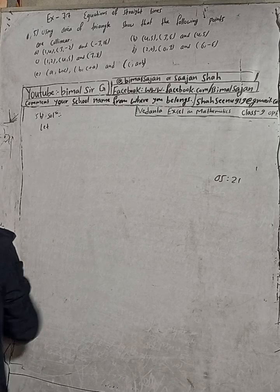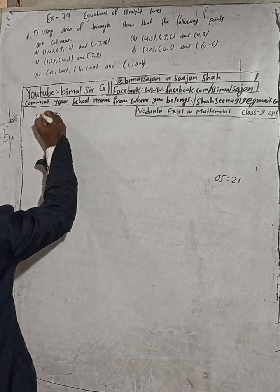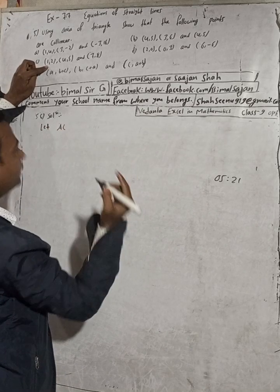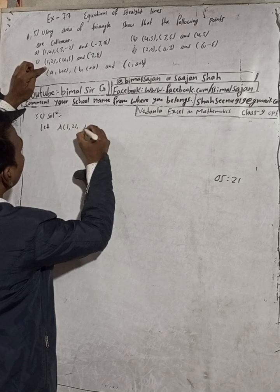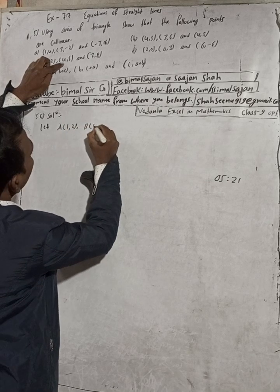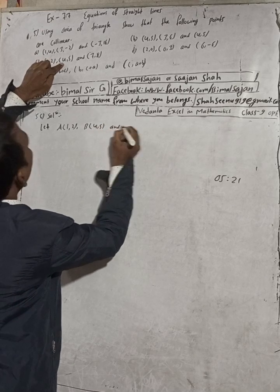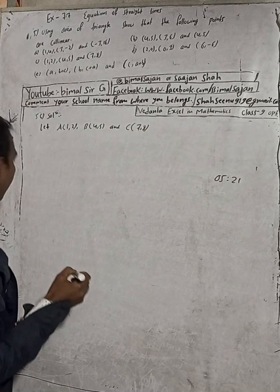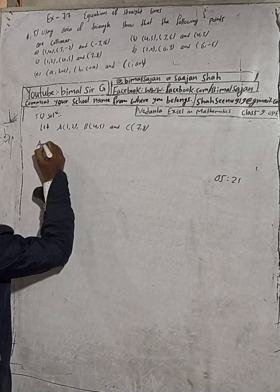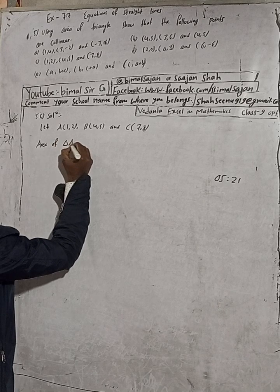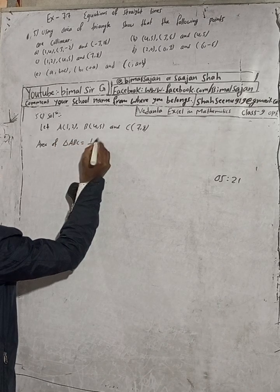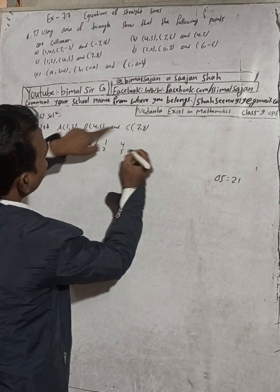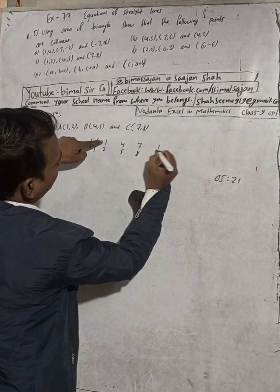Now for part 5c: let A(1,2), B(4,5), and C(7,8). We find the area of triangle ABC, which equals 1/2. We write the coordinates: 1,2 then 4,5 then 7,8 and repeat 1,2.